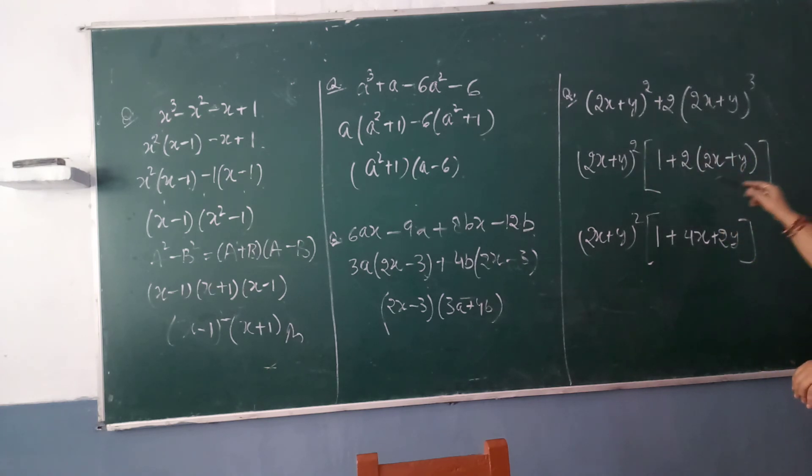Now (2x + y), the whole square bracket we are writing again. And inside the bracket, if you will solve, so 1 + 4x + 2y will come. Okay, thank you.